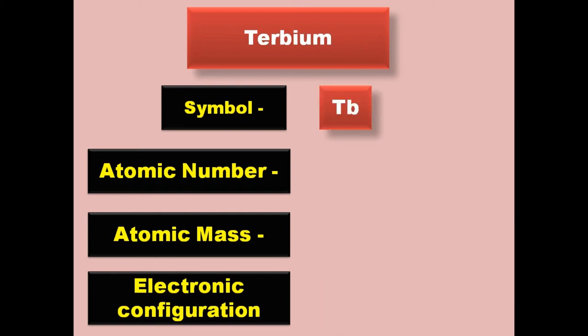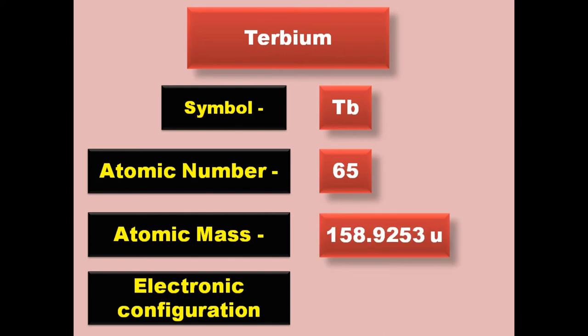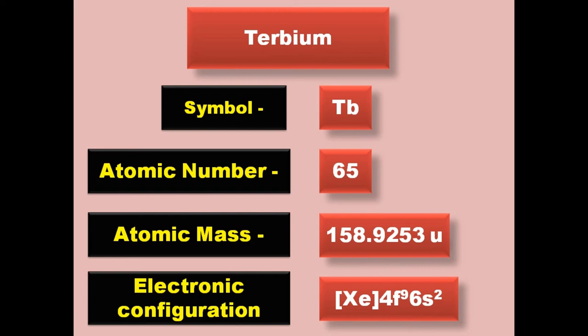Terbium has symbol Tb, atomic number 65, atomic mass 158.925, electronic configuration [Xe] 4f9 6s2. Terbium is a lanthanide and exists in solid form at room temperature.